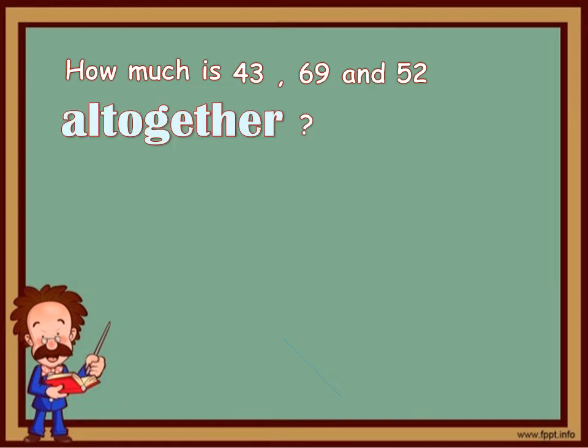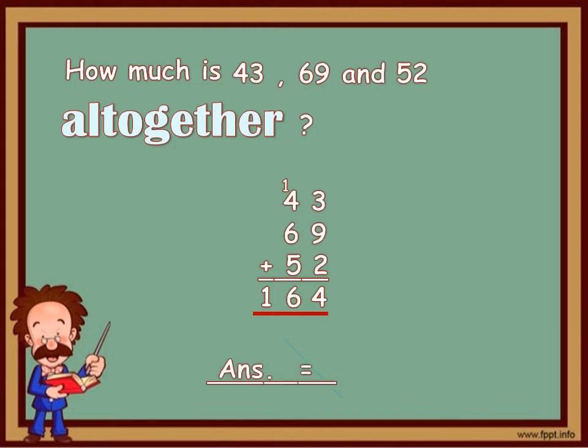So, whenever you see altogether, you have to add. You arrange the addends. 43 plus 69 plus 52 and start adding. 14. That's 4 and carry over 1. And 16. So, the sum of the addends here is 164.